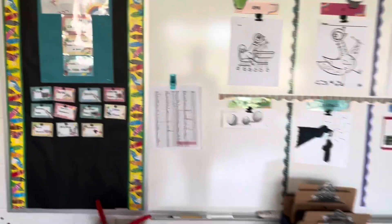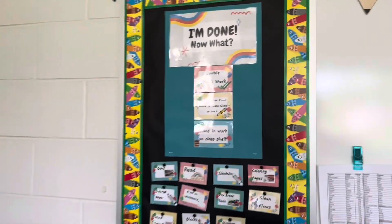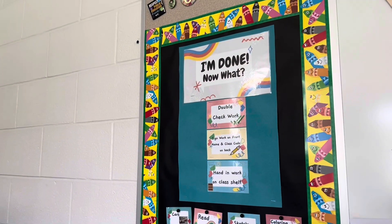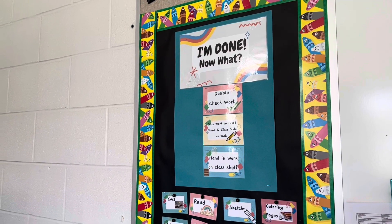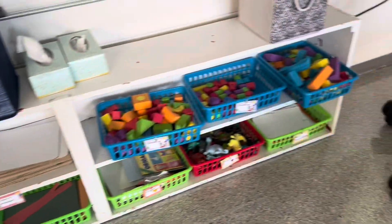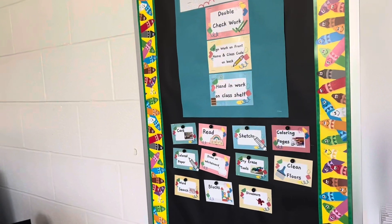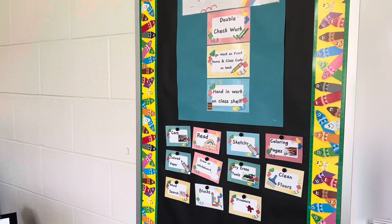And then here, next to all of our project displays, I have our all-done board. It has a little reminder at the top: I'm done, now what? Double check your work, sign on the front, and class code on the back. Hand work on my class shelf, which is just here in the baskets. And all of our options that can rotate for our early finisher area. This is really nice when it can be self-sufficient for the kids, and all of my signs are paired with pictures so that my non-readers or younger students can see what it is.